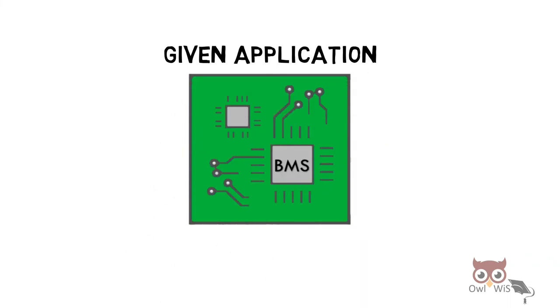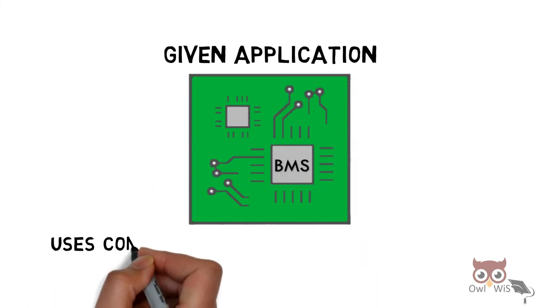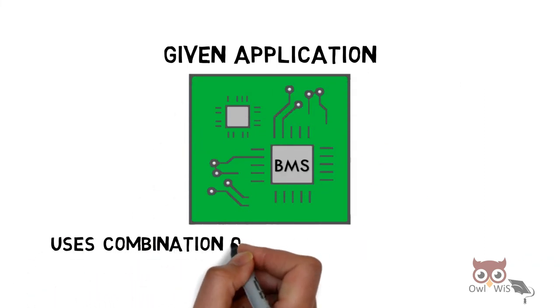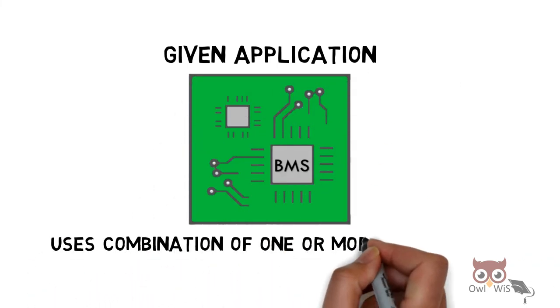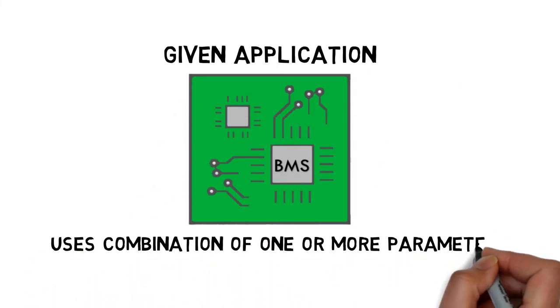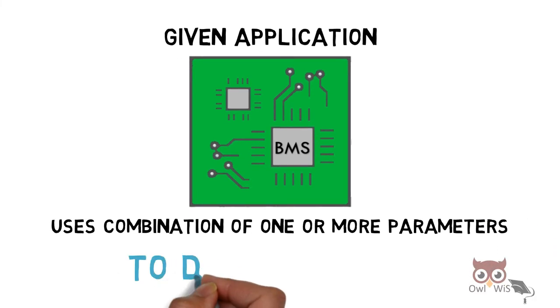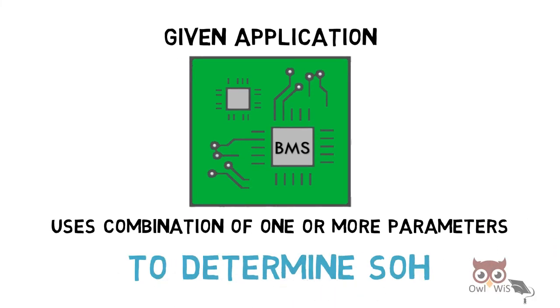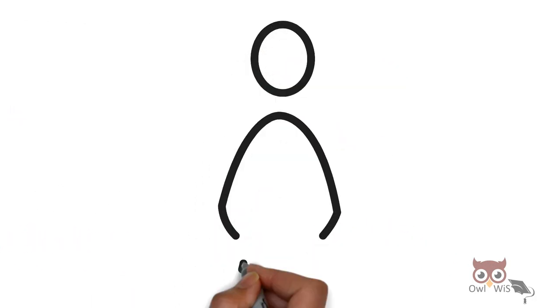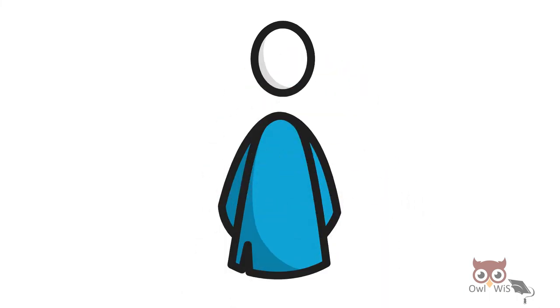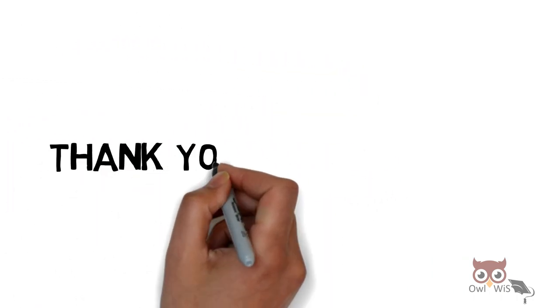SOH evaluation does not measure a physical quantity directly. Instead, the process is very arbitrary — for a given application, the BMS uses a combination of one or more parameters to determine SOH.